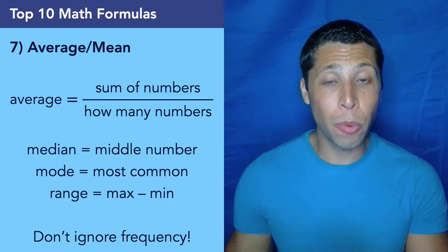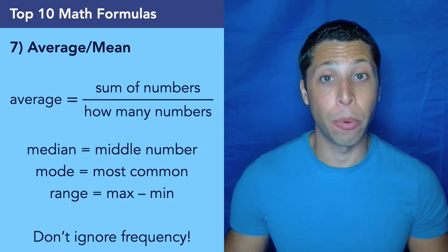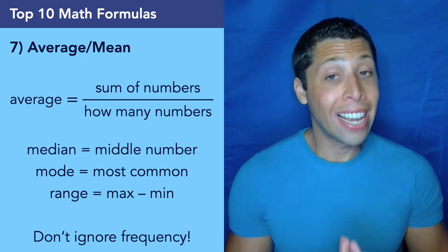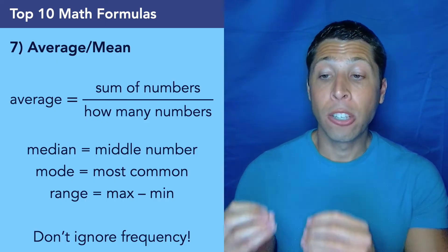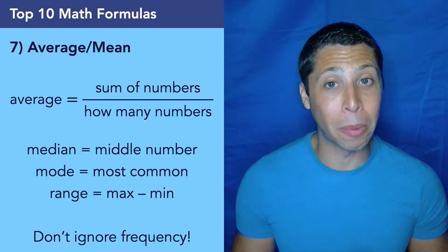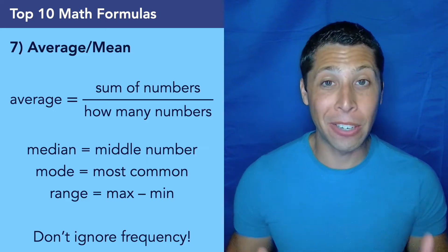And for all of these concepts, make sure you understand how the data is being presented to you. The SAT loves to present data sets as frequency charts, histograms, dot plots. So we have to take the frequency into account. It might not just be a nice list of numbers. You might have to do some multiplication to understand how many of each number there are.